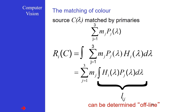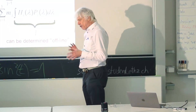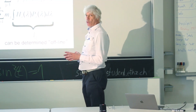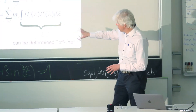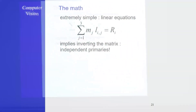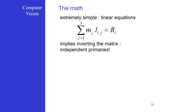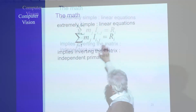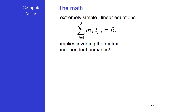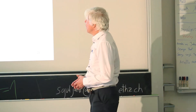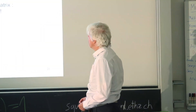We build all nine numbers into a 3×3 matrix, where i and j define the rows and columns. These we call the LIJs. The problem reduces to finding the M values from this equation — which is simply a system of linear equations. It is straightforward to solve for the M-vector (M1, M2, M3), which tells us how much of each primary we need.